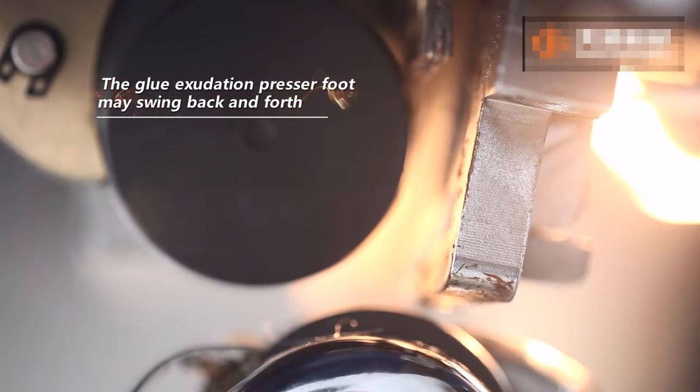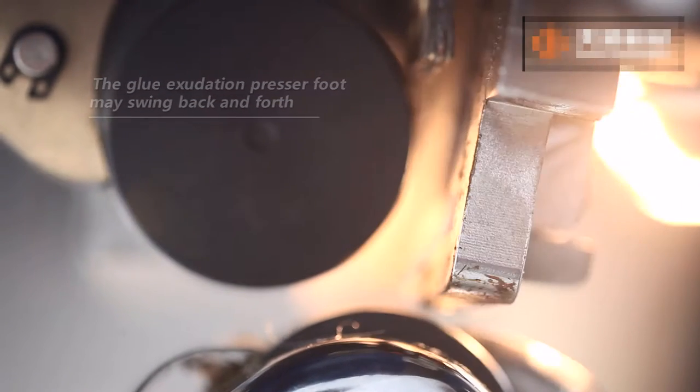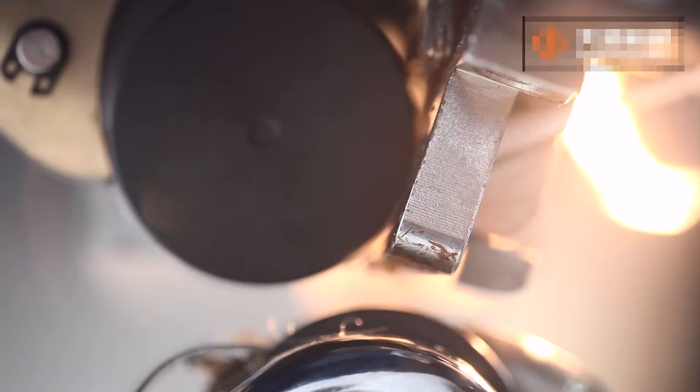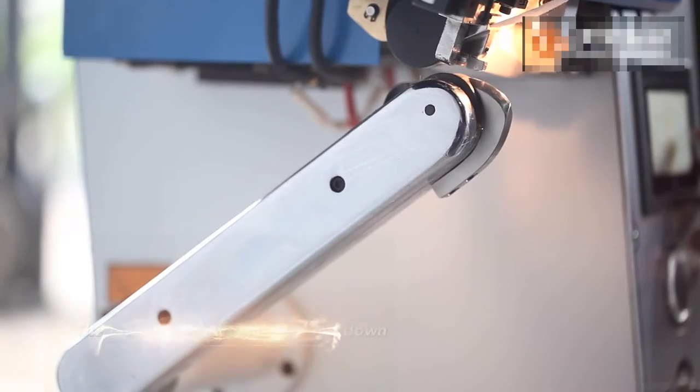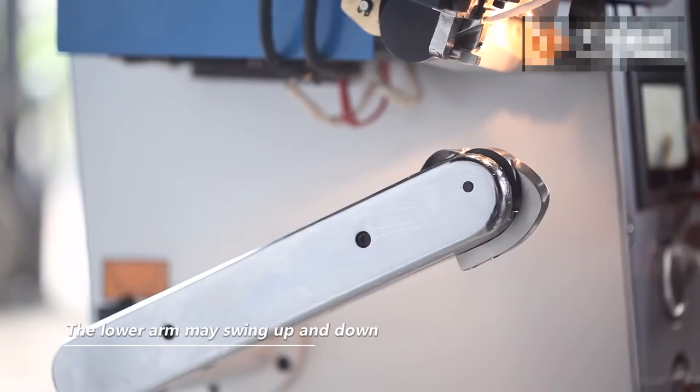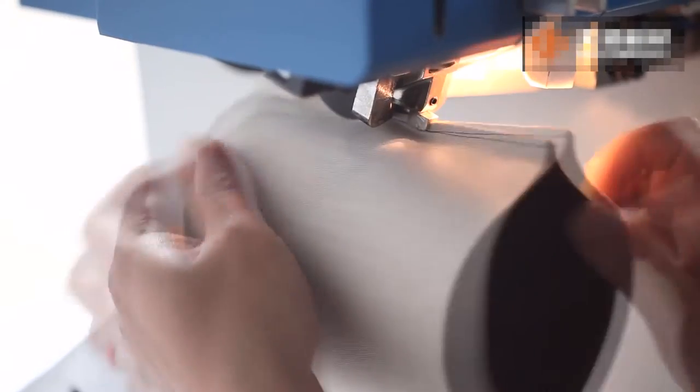The glue exudation presser foot may swing back and forth for easier belt training. The lower arm may swing up and down for easier operation of cylindrical leather material.